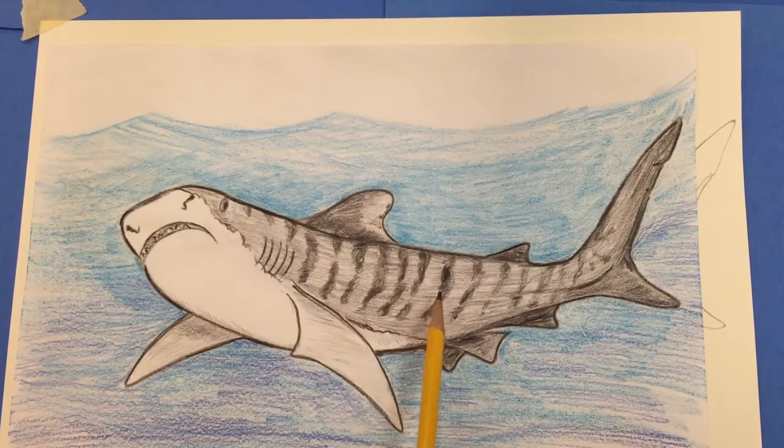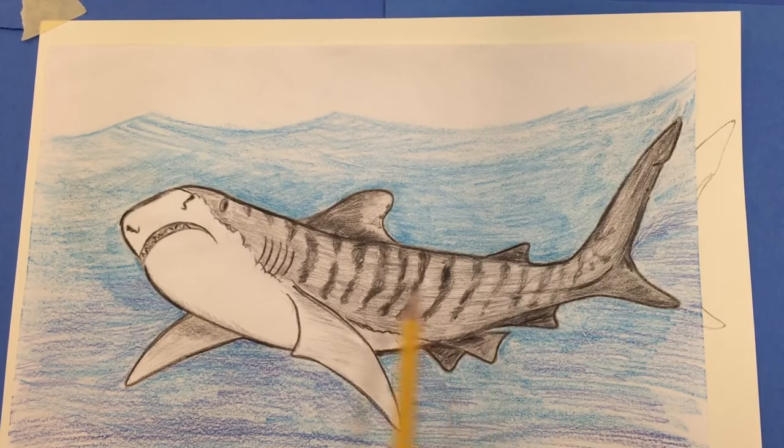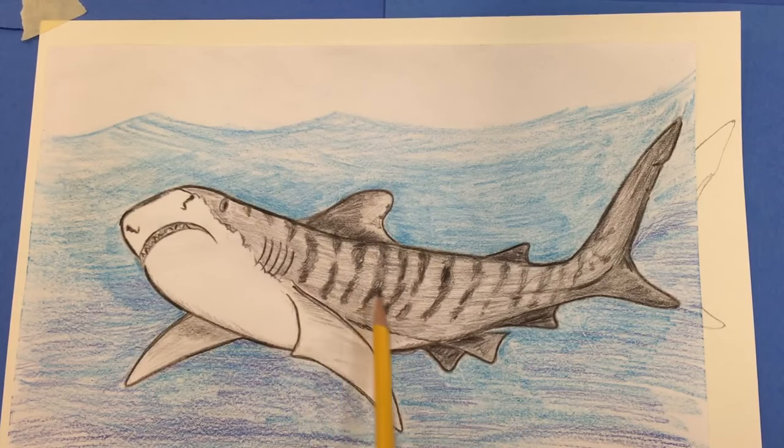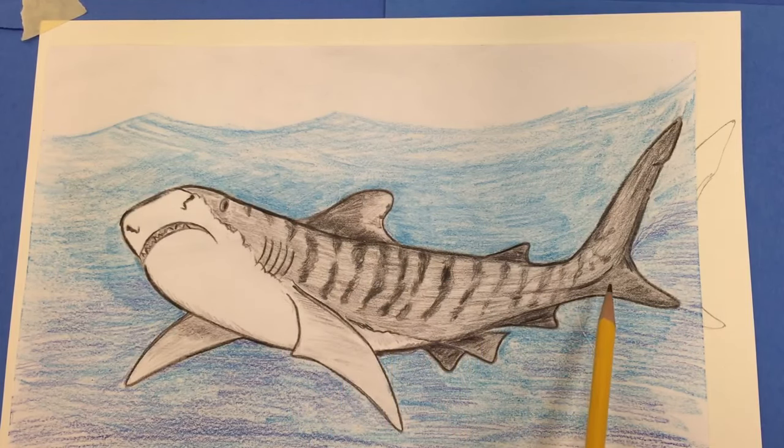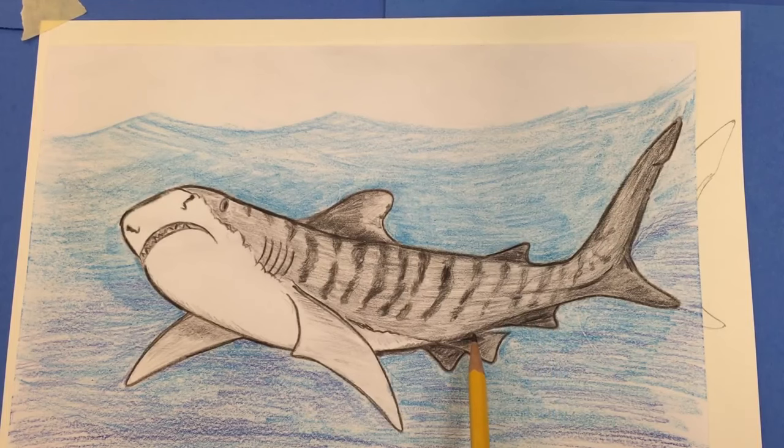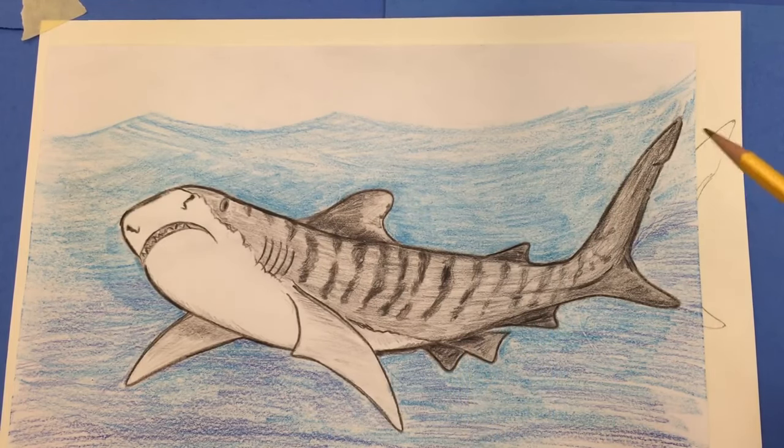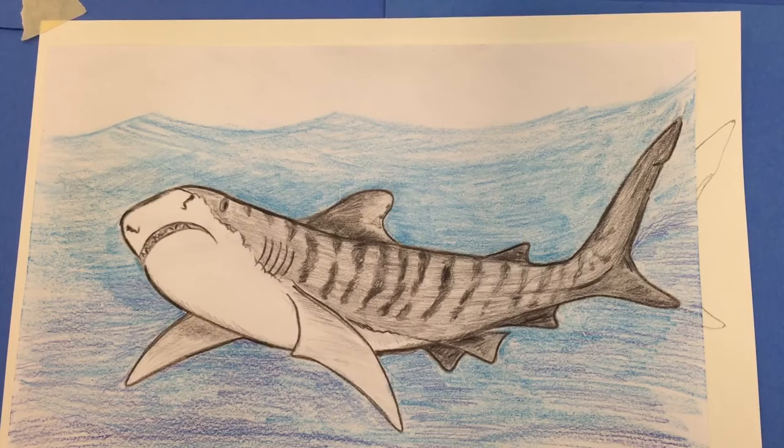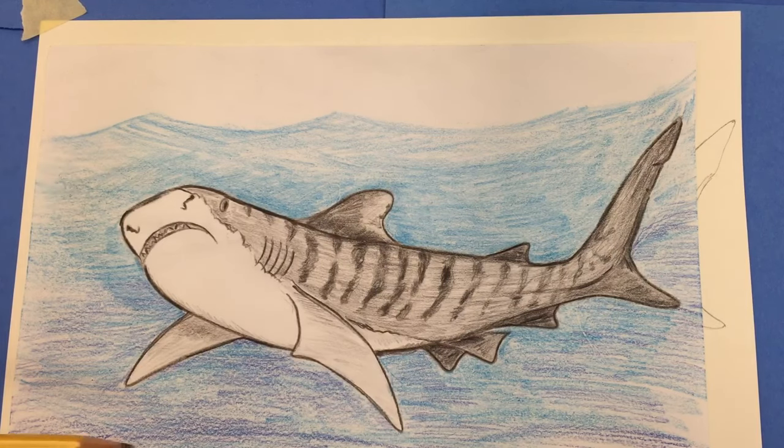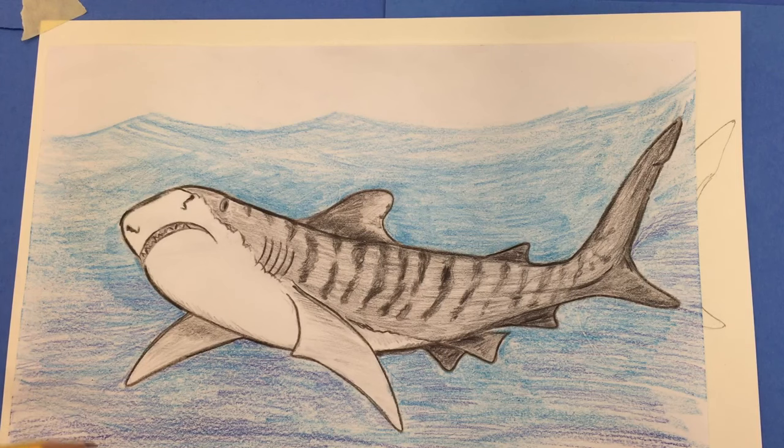which is what gives the tiger shark its name, I've colored those in much darker. And you can see they sort of fade as they go out towards the tail. And to show a shadow beneath, I've colored these fins a bit darker. And you can see in the water also, I've used a lighter color to show the more brightly lit water at the surface, along with some darker colors where there's not as much light in the deeper part.